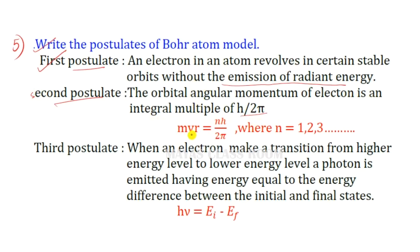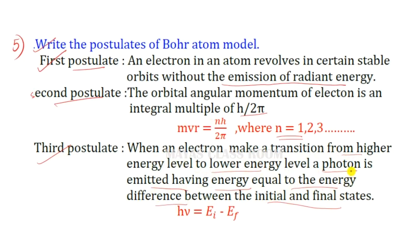The equation is mvr = nh/2π, where n = 1, 2, 3, etc. The third postulate states that when an electron makes a transition from a higher energy level to a lower energy level, a photon is emitted having energy equal to the energy difference between the initial and the final state.